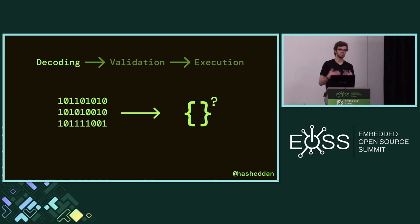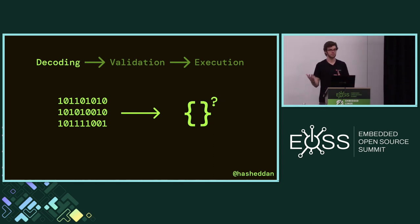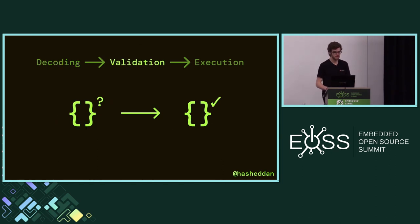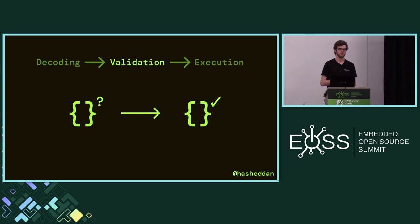Frequently, the module instance is represented as some sort of abstract syntax tree, but it doesn't necessarily have to be. Especially in more constrained environments, there may be other ways to represent it that can help with code size and things like that. Then you go through a set of validation — you're basically taking that representation and running it through a number of attributes in the spec that classify it as well-defined, ensuring that it is a valid WebAssembly module.